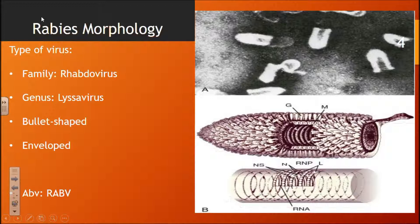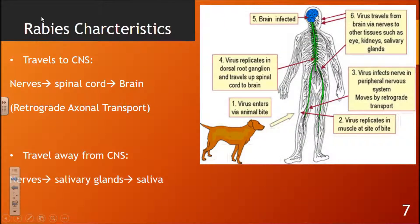Let's go over rabies morphology first. The rabies virus is in the family Rhabdoviridae, and its genus is Lyssavirus. It has a characteristic bullet shape, and it is an enveloped virus. Its genome is non-segmented, and it is a negative single-stranded RNA virus.